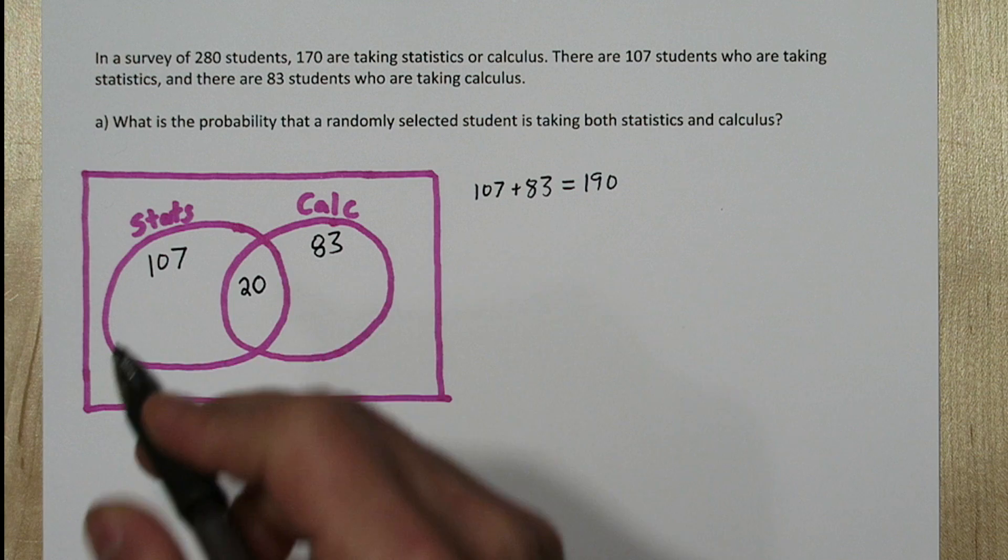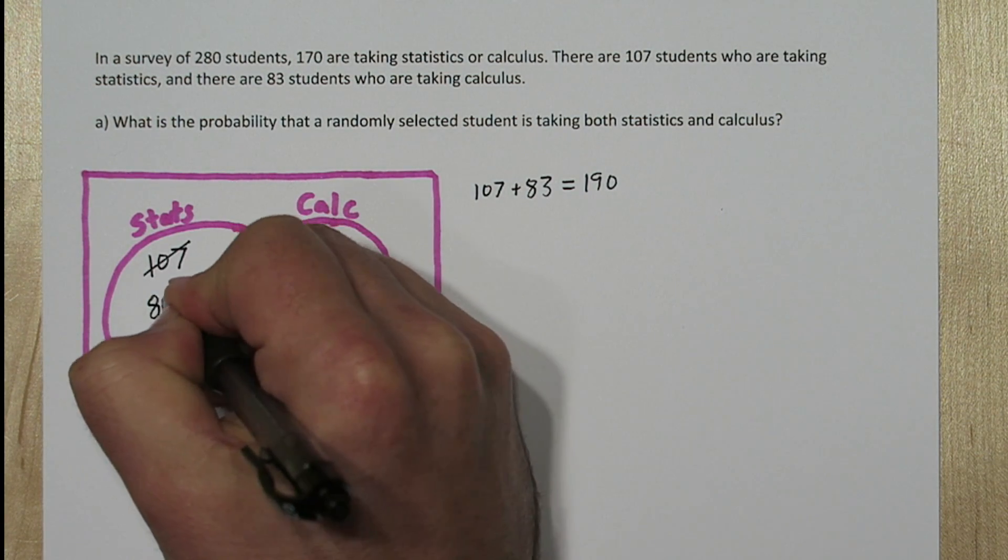And our stats bubble still needs to add up to 107. So we need to adjust this number by subtracting 20 from it. Now it's just 87, and the whole bubble adds to 107. We have to do the same for calculus. Alright, now these three numbers add to 170.